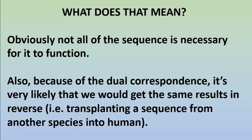So what does it all mean? Obviously it means that not all of the sequence is necessary for it to function properly — you can replace parts of the sequence and have no effect on function. Because of this dual correspondence — high variance in nature correlating with high variance allowed in the lab, and lack of variation in nature correlating with lack of variation allowed in the lab — this implies that if we could transplant something from a yeast or other animal into a human, it would likely work.